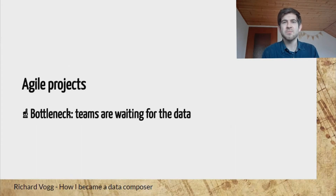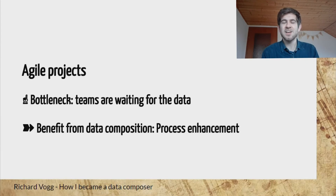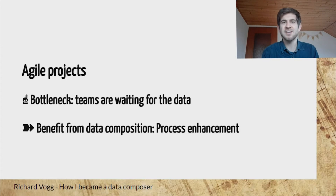Another application emerged when we had more and more agile projects. We had the aim of having a working deliverable in each iteration, and this was sometimes hard to reach because we had to wait a lot of time for the data — talking to the data owner, requesting accesses, bringing the data into the right format. By using a composed data set that looked like the expected final data set, we could already start to work on the output and the report while we were still waiting for the real data. In the end we simply replaced that composed data set with the real data set and improved the whole process a lot.